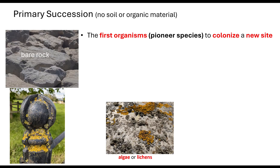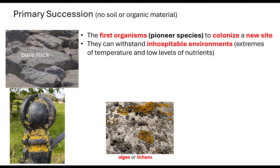The first organisms to colonise this new site are called pioneer species — the likes of algae or lichen. These are very unique organisms because they are able to withstand inhospitable environments. Remember, we talked about the lava — really hot — and glacial retreat — really cold — so these extreme temperatures. There are also no nutrients, or very low levels of nutrients, in the areas they colonise. They produce large quantities of seeds or spores that are distributed by the wind.